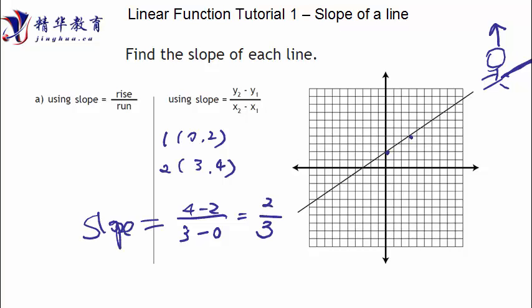Make sense? That's how to find slopes. This time it's a positive slope — see, this is your right arm. Positive.